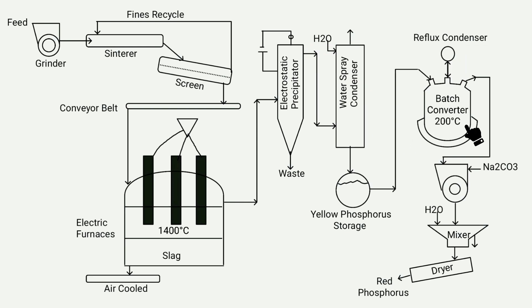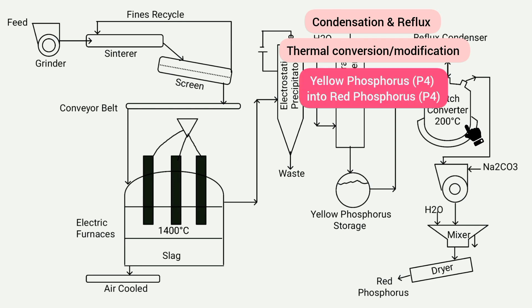This is a type of converter called a batch converter. The temperature inside it is around 250 degrees Celsius, and a reflux condenser is fitted in it, through which the process of condensation and reflux takes place. In this process, thermal conversion or thermal modification occurs, converting yellow phosphorus into red phosphorus, and the conversion rate is around 70 percent.